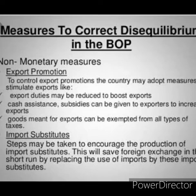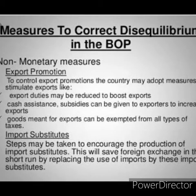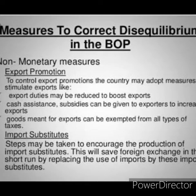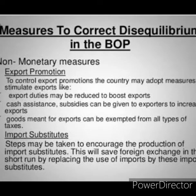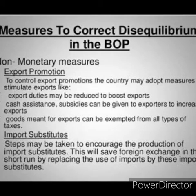A country with fundamental disequilibrium in the balance of payments may devalue its currency in order to stimulate exports and discourage imports. To correct BOP disequilibrium and equalize the balance of payment, the country increases exports and discourages imports — encouraging exports but discouraging imports.